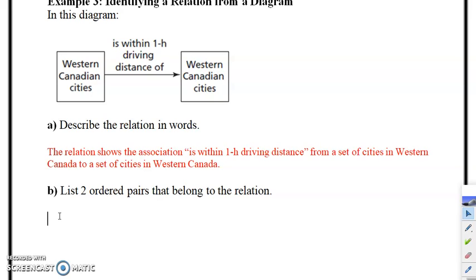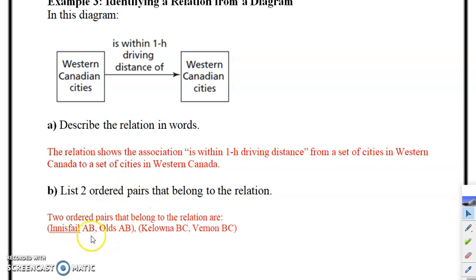So Inisfail, Alberta is within one hour driving distance of Olds, Alberta - there's your ordered pair, a Western Canadian city and a second Western Canadian city. Now it just happens that they both are in Alberta, that doesn't necessarily have to be the case. You could go from Alberta to BC because it just said Western cities.